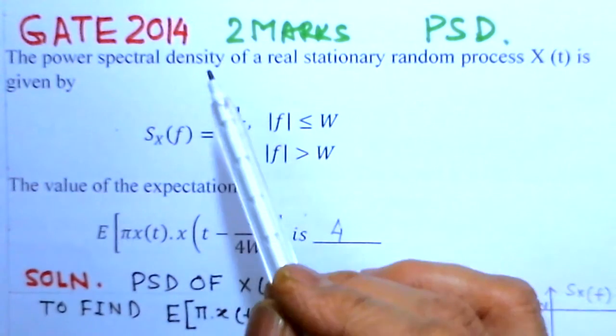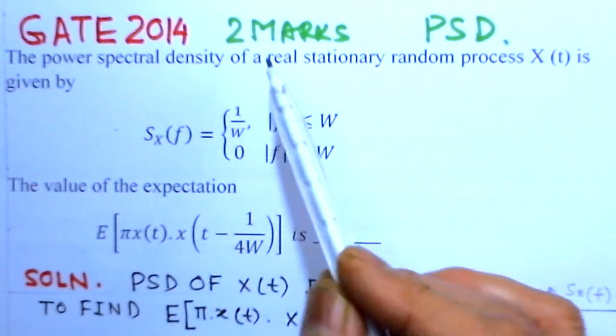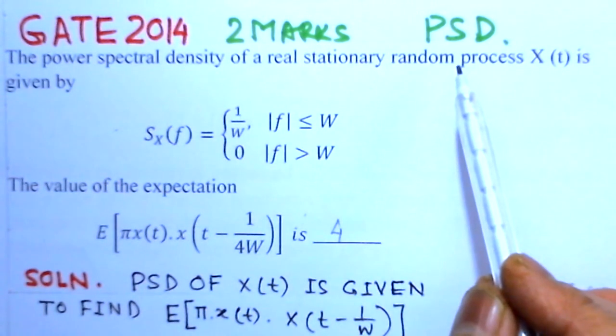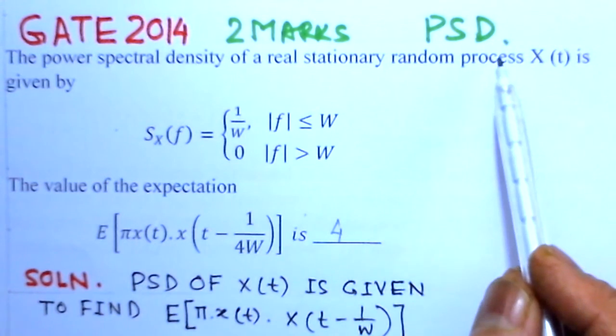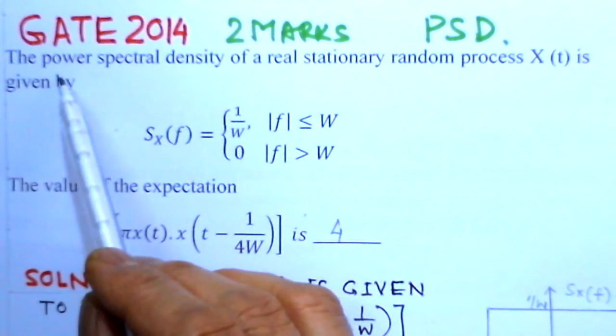The present problem is from GATE 2014. It is worth 2 marks and is basically on power spectral density. Here we read out the problem.